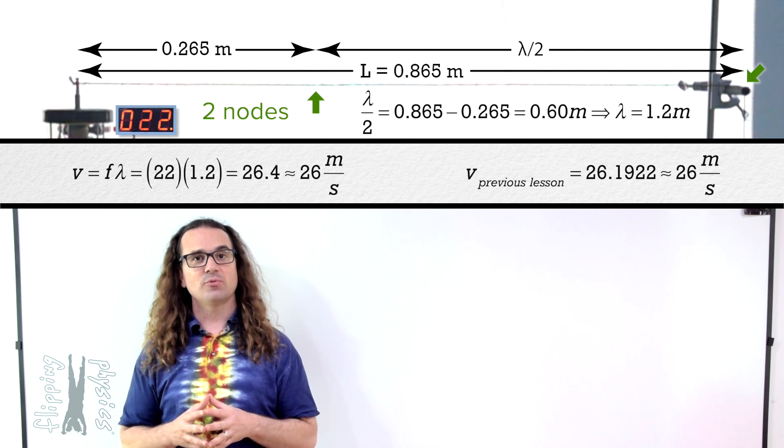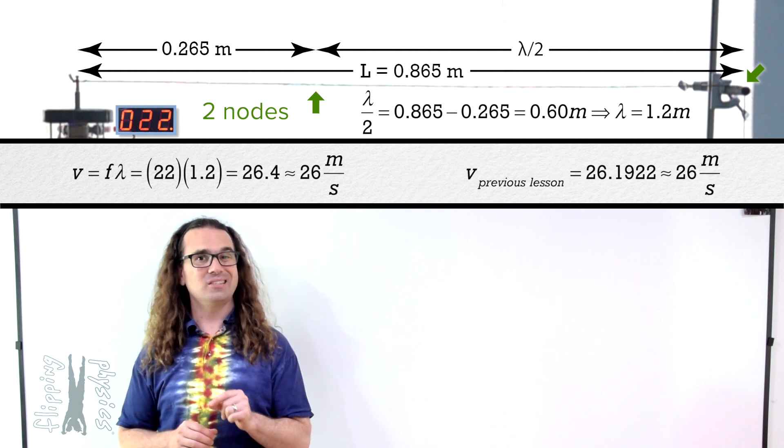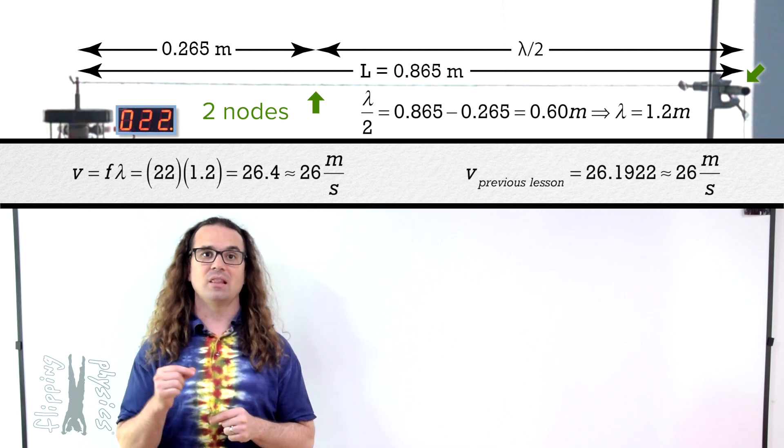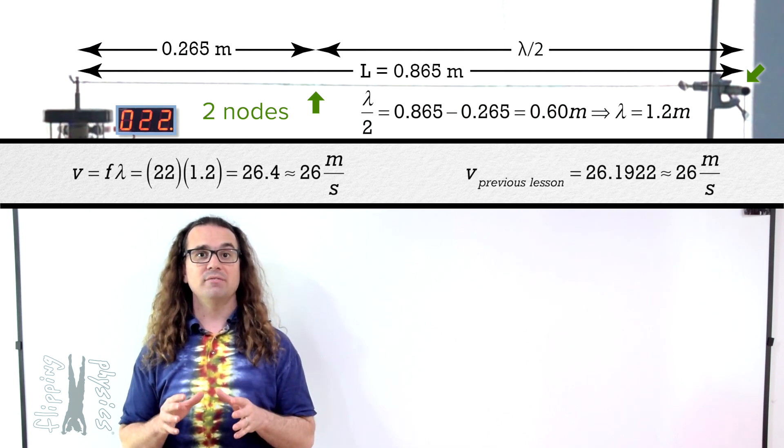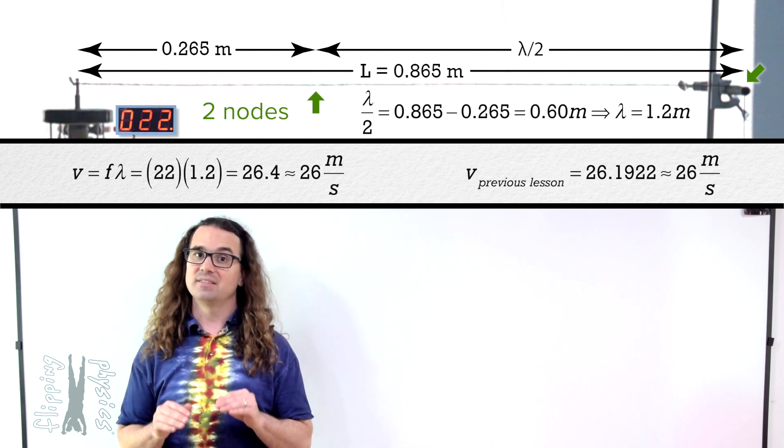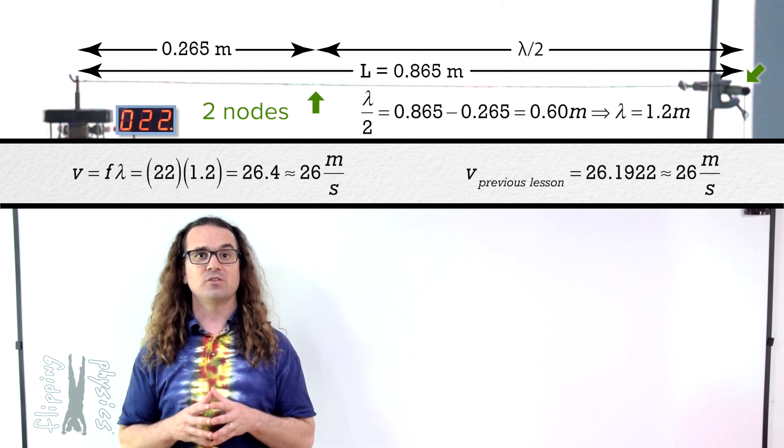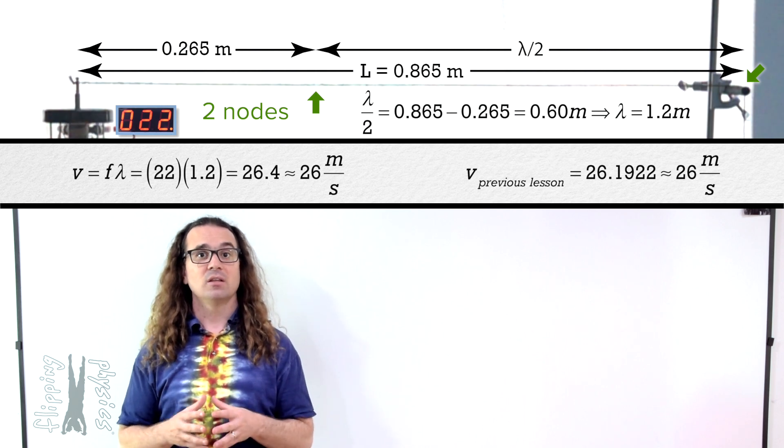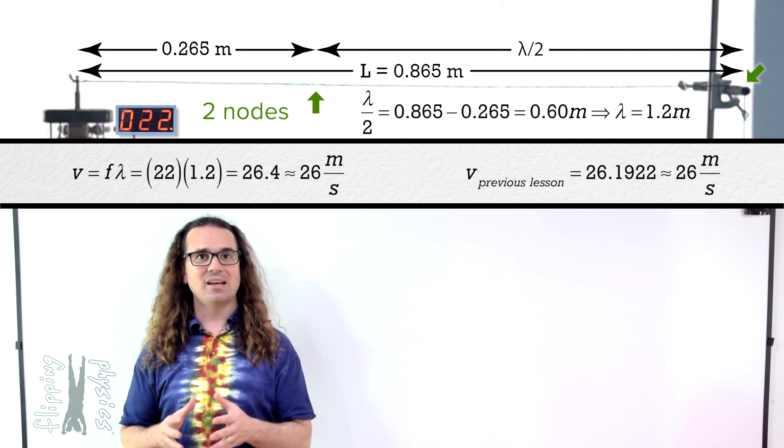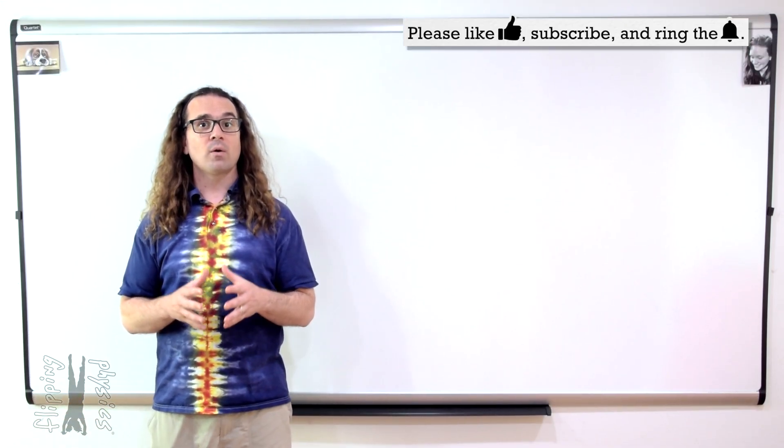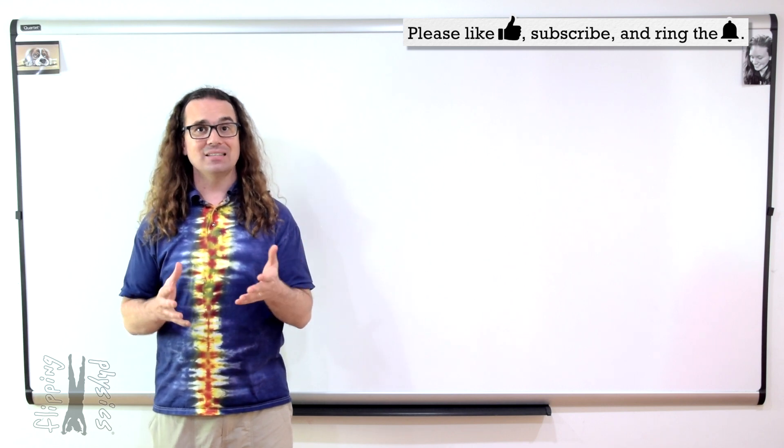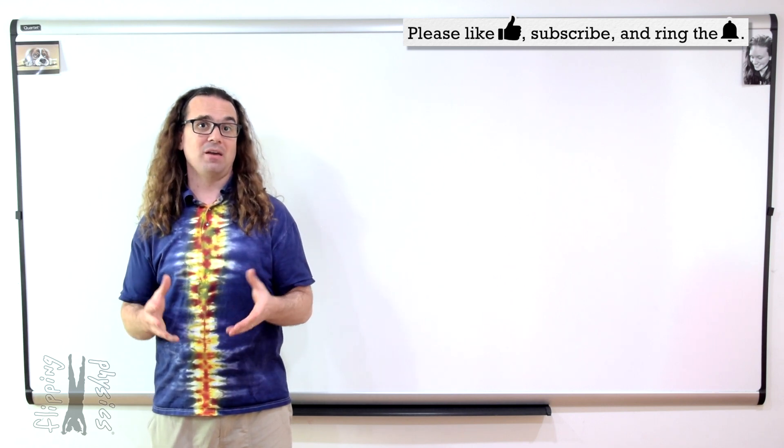Now, I do want to reiterate that the only reason this standing wave pattern was able to be set up on this string between the allowable half wavelengths is because one of the two ends of the string was not quite a node. This is not true of examples where the two ends have to be nodes, like a stringed instrument, or where the two ends have to be anti-nodes, like an open pipe instrument, or where one end has to be a node and the other end has to be an anti-node, like a closed pipe instrument.